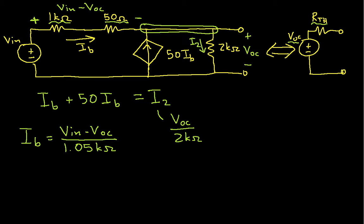So I can now plug everything in and I will have that 51, that's a 1 here and a 50 here, times IB, where IB is VIN minus VOC over 1.05k ohms is equal to VOC over 2k ohms.